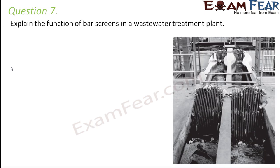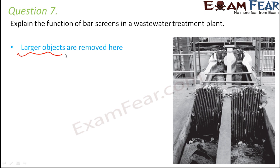Question number 7: Explain the function of bar screens in a wastewater treatment plant. Bar screens contain long bars structured to allow liquid and small-sized solid particles to pass through, but prevent larger particles from passing. Their main function is to remove larger objects like plastics, papers, ropes, etc. This is the first step in a wastewater treatment plant and is categorized under preliminary treatment.